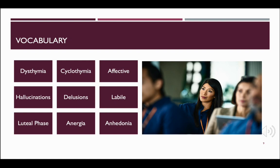Before we move on, I wanted to review some vocabulary words you'll need to know. Dysthymia: persistent, mild depression — at least two years of dysthymia occur in some individuals, and for some this can lead to major depressive disorder. Cyclothymia: a mood disorder that causes emotional highs and lows, but the mood shifts are not as extreme as those in people with bipolar disorder. Affective means relating to moods, feelings, and attitudes. Hallucinations: when an individual experiences something that is not real or not present — auditory (hearing things), visual (seeing things), tactile (feeling things), or less commonly olfactory (smelling something that's not there).